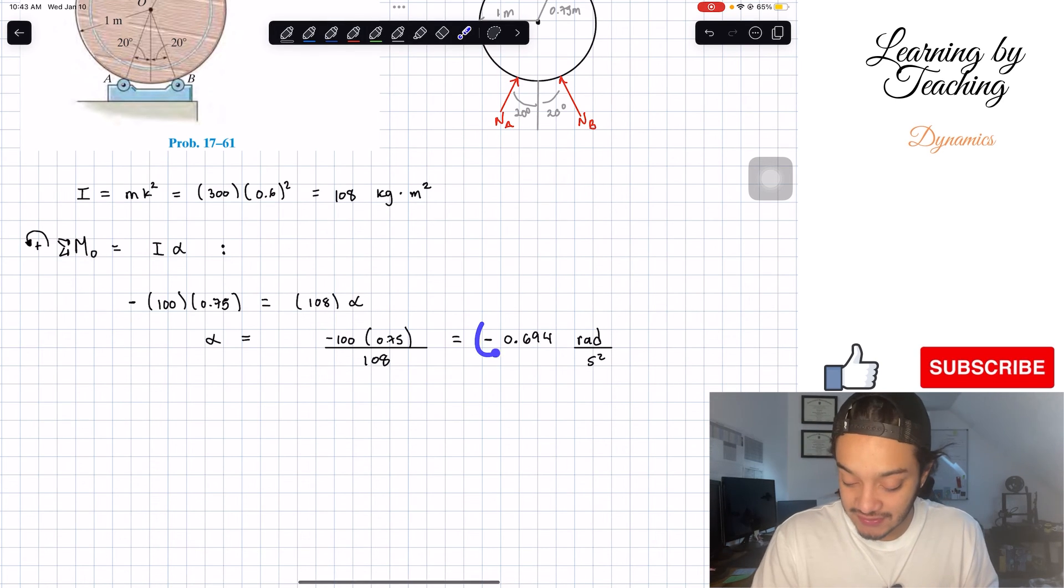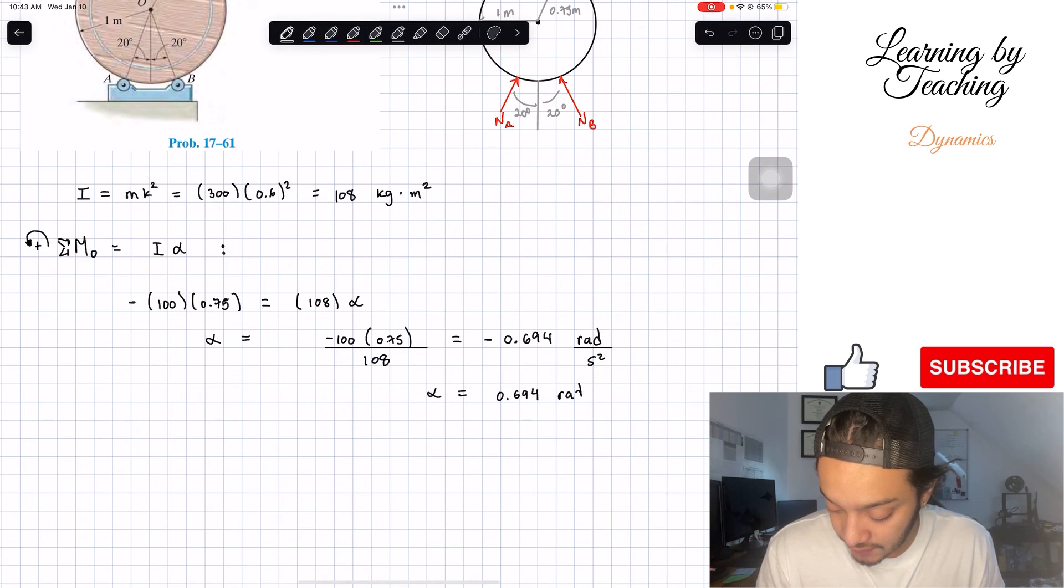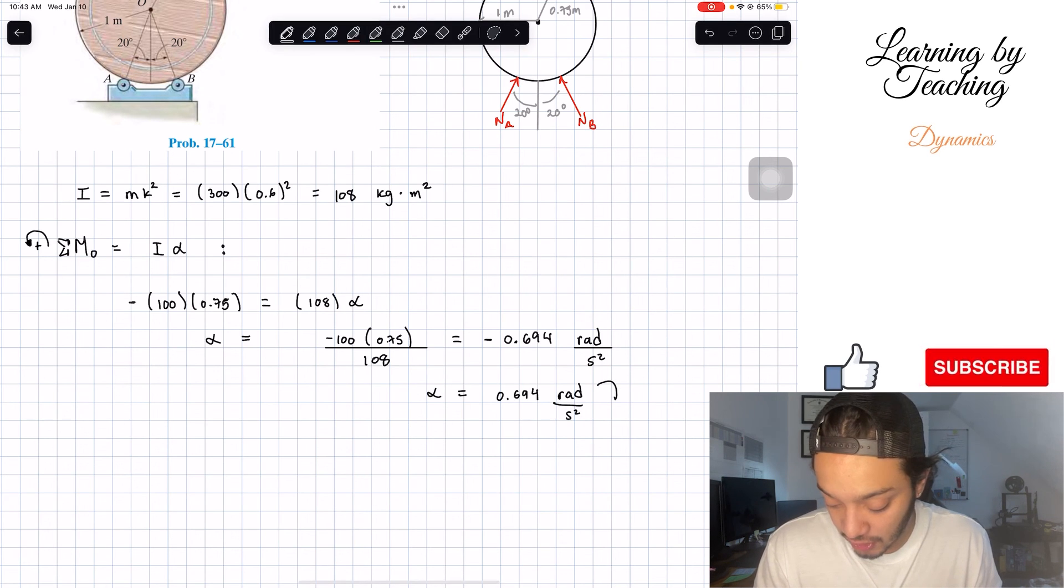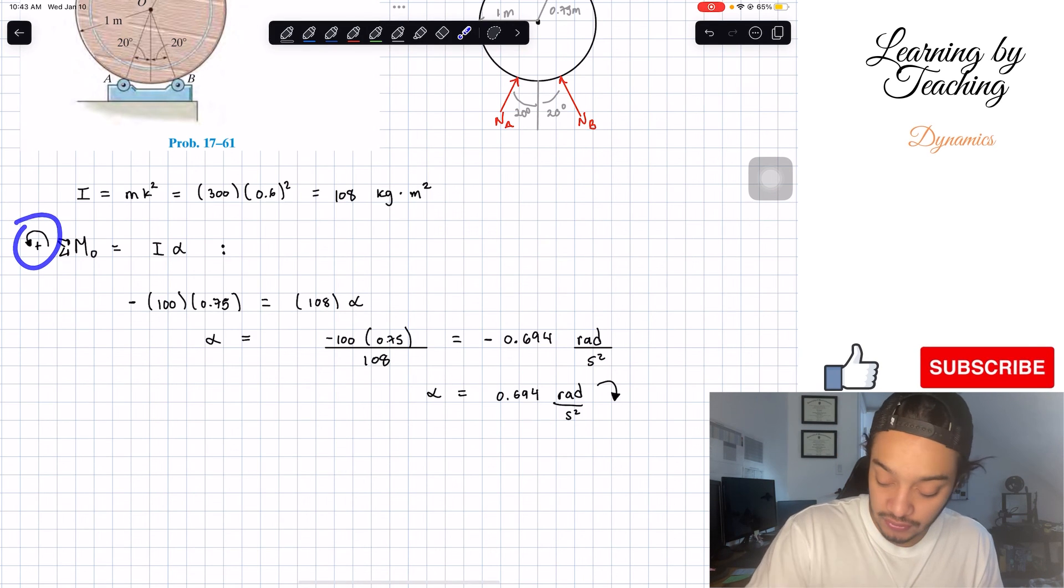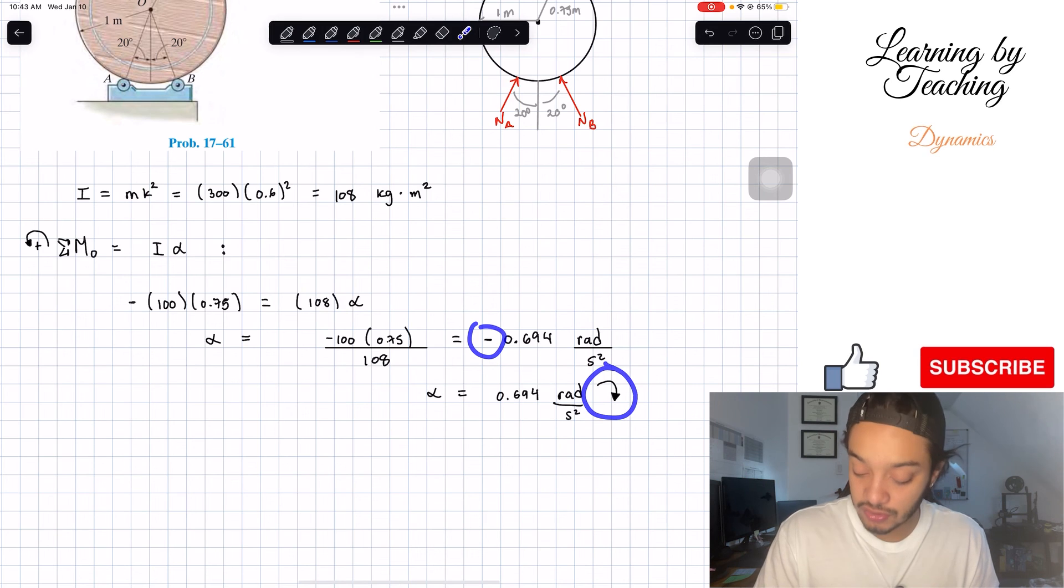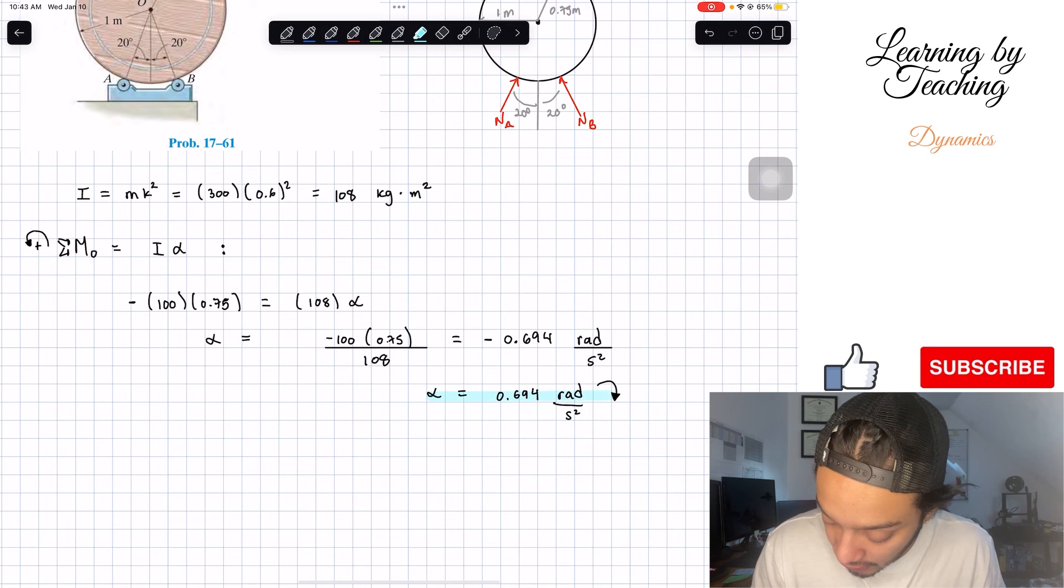What does this negative mean in this case? This negative just means that our acceleration is equal to 0.694 radians per second squared, but going in the clockwise direction. Because we initially assumed that counterclockwise is positive, if it's negative, that means we're going clockwise direction. And just like that, we found the solution for our problem.